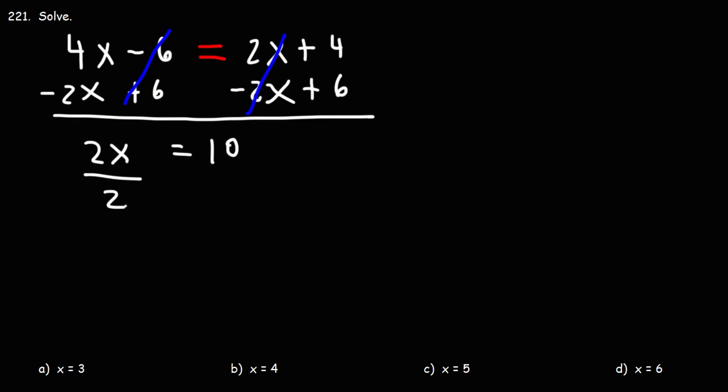Next, to separate the 2 from the x, we need to divide by 2. 2 divided by 2 is 1. On the right, we have 10 divided by 2, which is 5.